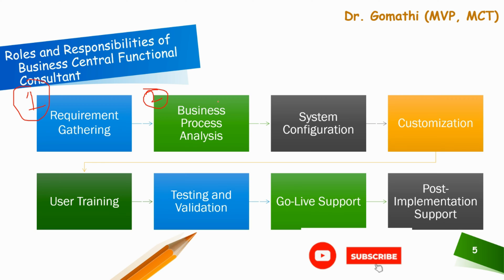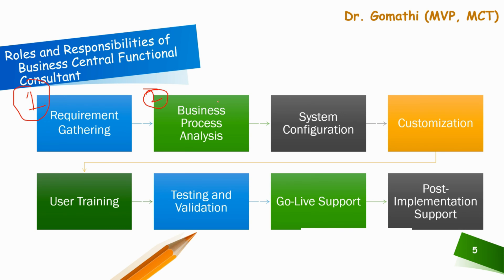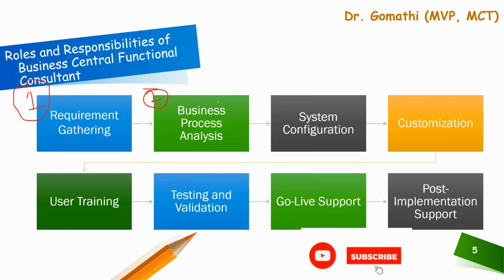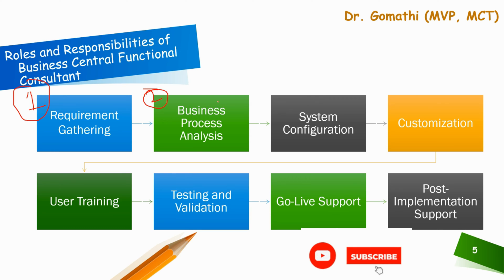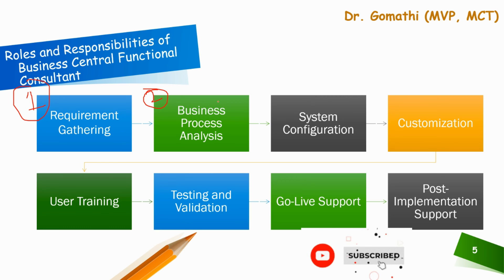The next phase is business process analysis. After gathering the requirements, you conduct a thorough analysis of the company's inventory workflows. You identify manual processes that lead to stockouts or overstocking and suggest improvements. You propose setting up minimum and maximum stock levels and implementing automatic reorder points to optimize the inventory levels.